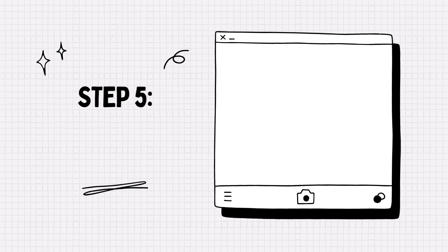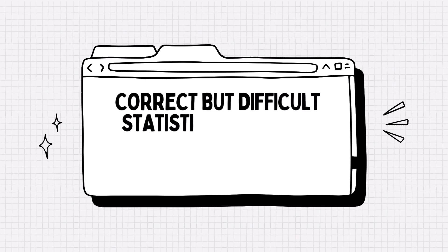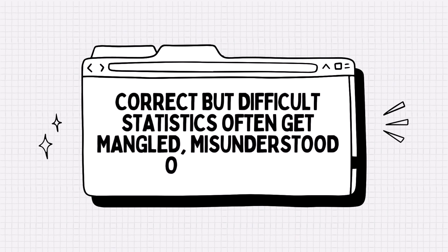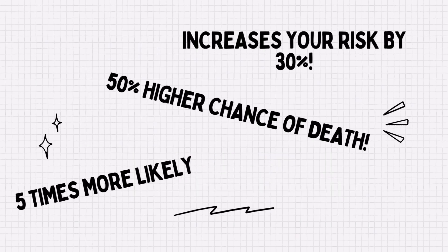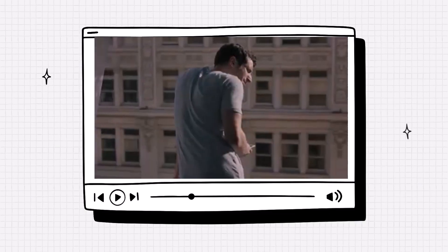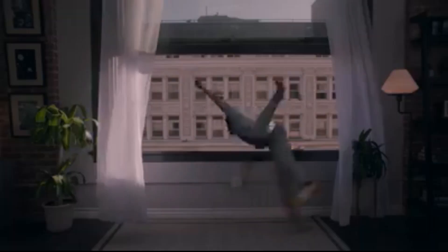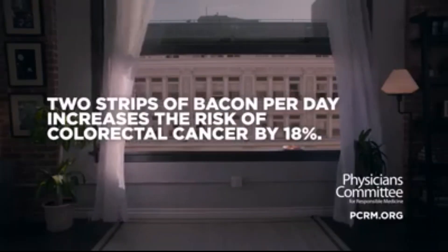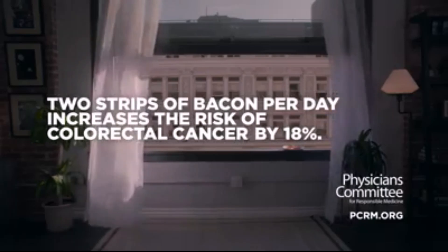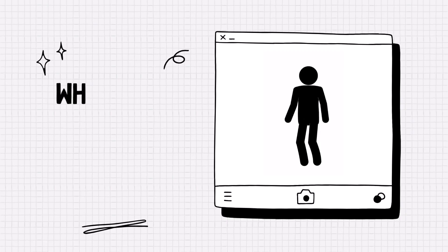Step 5: Be confused. Sometimes very complex statistics can be mangled because people just don't understand them. A correct but difficult-to-understand stat can become an easily understood but wildly inaccurate one. One of the more well-known offenders is the risk ratio. Here's an example from the US-based campaign group Physicians Committee for Responsible Medicine. In the ad, a man is shown reaching for a plate of bacon rashers while an ominous church bell tolls. As he goes to eat the bacon, he trips and falls out an open window. An on-screen stat claims that two strips per day increases the risk of colorectal cancer by 18%.